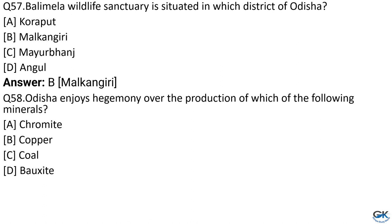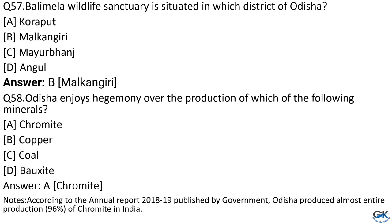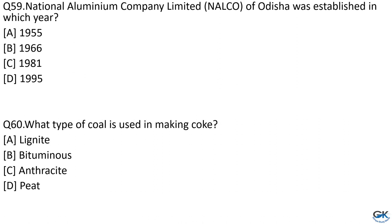Question No. 58: Odisha enjoys hegemony over the production of which of the following minerals? Option A: Chromite. Option B: Copper. Option C: Coal. Option D: Bauxite. The answer is Option A, Chromite. According to the annual report 2018–19, Odisha produced almost 96% of chromite in India. Question No. 59: National Aluminium Company Limited of Odisha was established in which year? Option A: 1955. Option B: 1966. Option C: 1981. Option D: 1995. The answer is Option C, 1981.